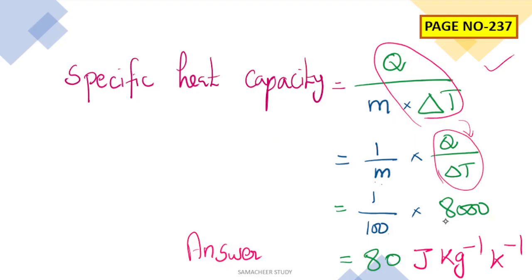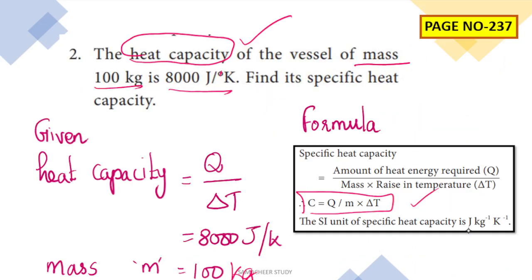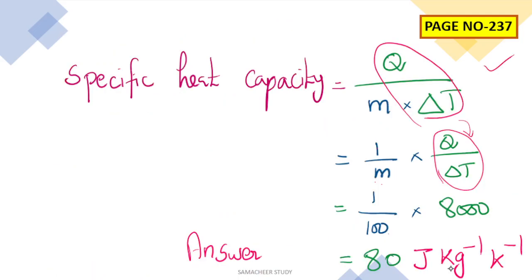Q divided by delta T is equal to 8000. So the specific heat capacity equals 8000 divided by 100, which gives 80. The unit is joules per kilogram per Kelvin, that is J kg⁻¹ K⁻¹. Therefore, specific heat capacity equals 80 J kg⁻¹ K⁻¹.